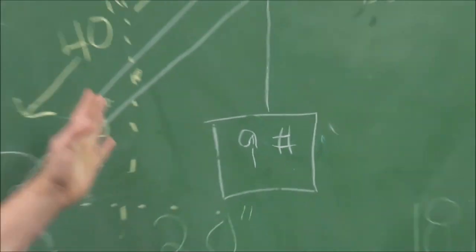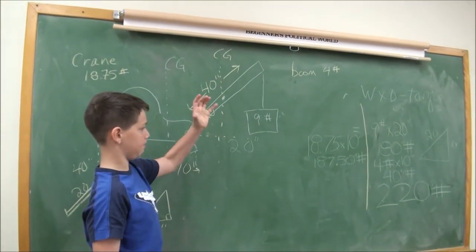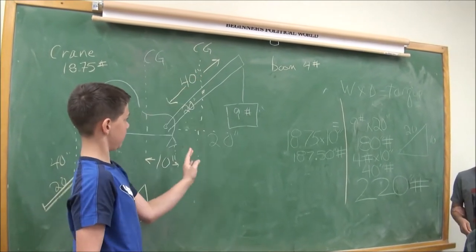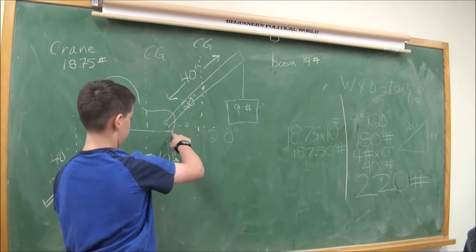Well, it's going to be in the middle of the crane because both sides would weigh the same. So the center of gravity is 20 inches from the pivot point.